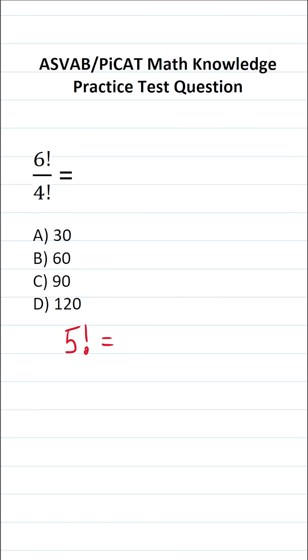So for example, 5 factorial would be 5 times 4 times 3 times 2 times 1. Likewise, 3 factorial would be 3 times 2 times 1.